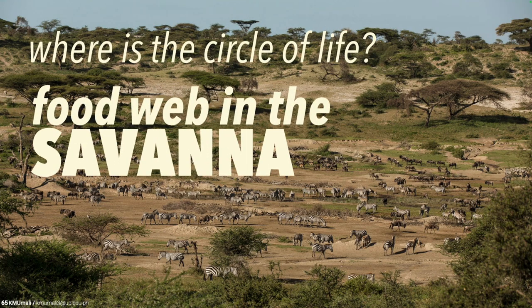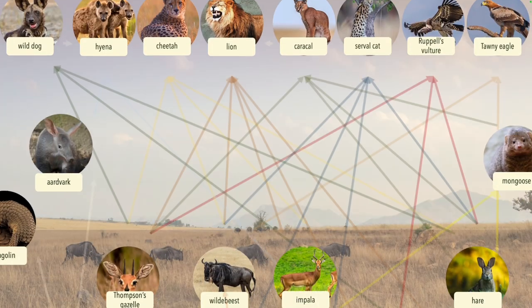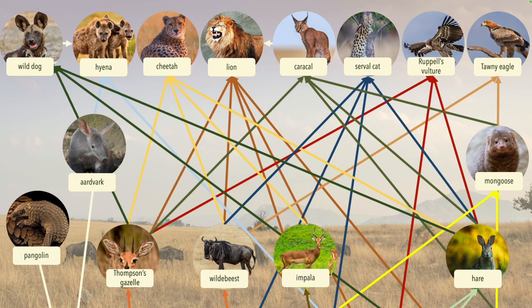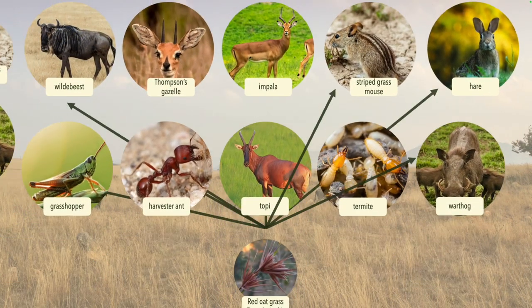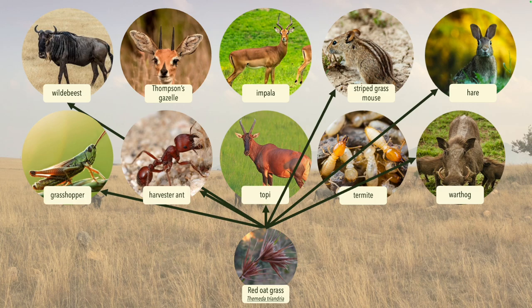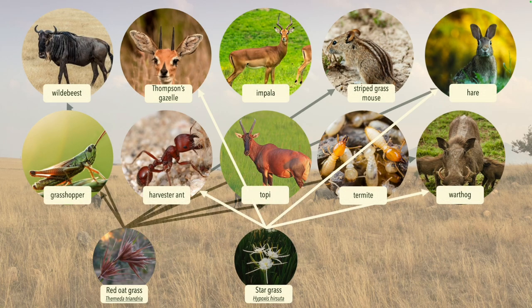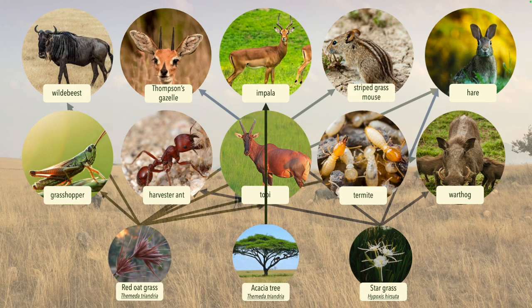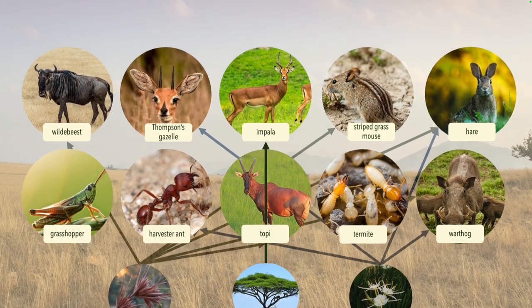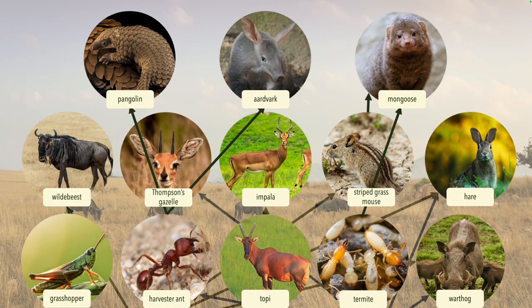Allow me to show you the food web in the savanna and the role each creature plays in this elaborate relationship within the ecosystem. Producers in the savanna are the grasses such as red oat grass and star grass, which are consumed by primary consumers — herbivores such as wildebeests, gazelles, topi, and small rodents, and of course insects. The elephants and the zebras also graze on grasses. Impalas and giraffes graze on trees and shrubs. The pangolin, the aardvark, and mongoose are secondary consumers which consume small insects.